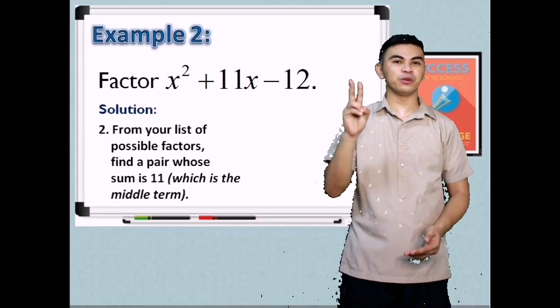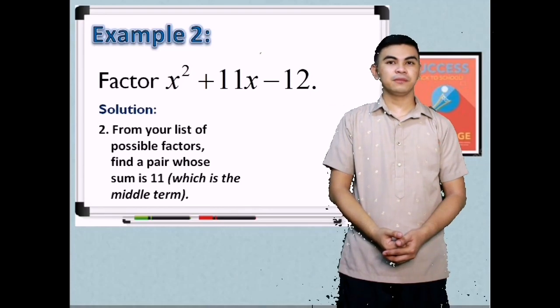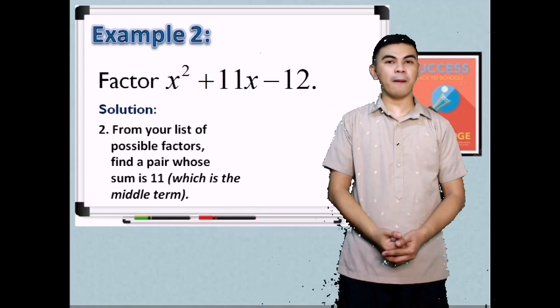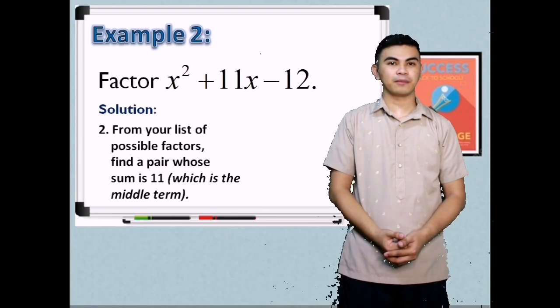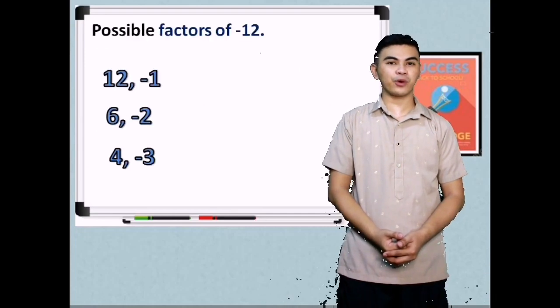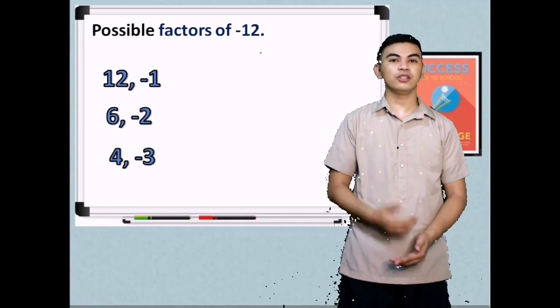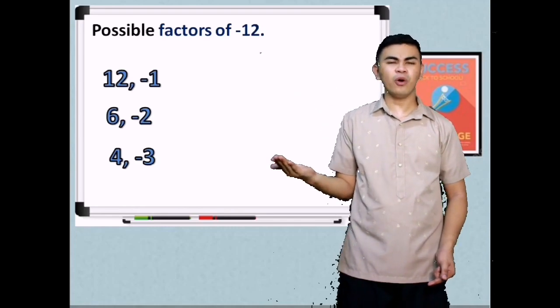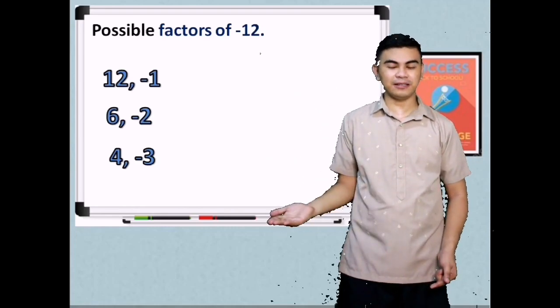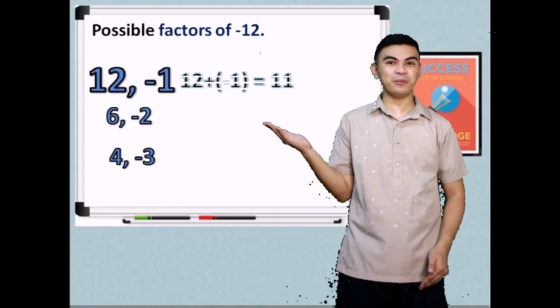Step 2, from your list of possible factors, find the pair whose sum is positive 11 which is your middle term. Which among our factors adds up to positive 11? Is it 12 and negative 1, 6 and negative 2, or 4 and negative 3? Excellent! 12 and negative 1.